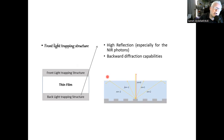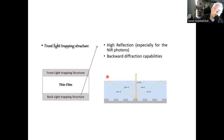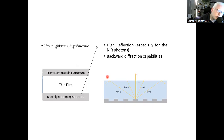This concludes the second generation overview. The first generation was a standard P-N junction with some layers in the front and back. The second generation was thin film technology — for thin film solar cells, we model the device not as a P-N junction but as a P-I-N junction: a P-doped layer, an intrinsic layer, and an N-doped layer.